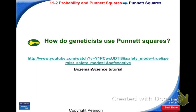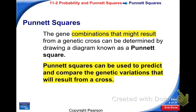So, for a good video on how to set up Punnett squares, there is this Bozeman science tutorial. There's the video link for it. We're going to look at how can we use genetics, Punnett squares to predict outcomes and how did geneticists use them.